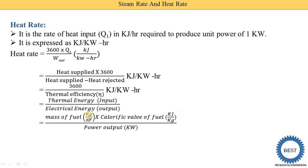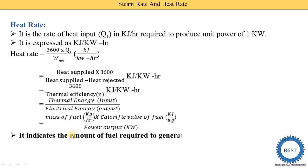In the thermal efficiency equation, the unit in the numerator is mass of fuel in kilogram per hour multiplied by calorific value in kilojoule per kg — the kg cancels, leaving kilojoule per hour. This divided by kilowatt gives units of kilojoule divided by kilowatt-hours. This indicates the amount of fuel required to generate one unit of electricity — by using heat rate, we can find the amount of fuel required to generate one kilowatt of power.